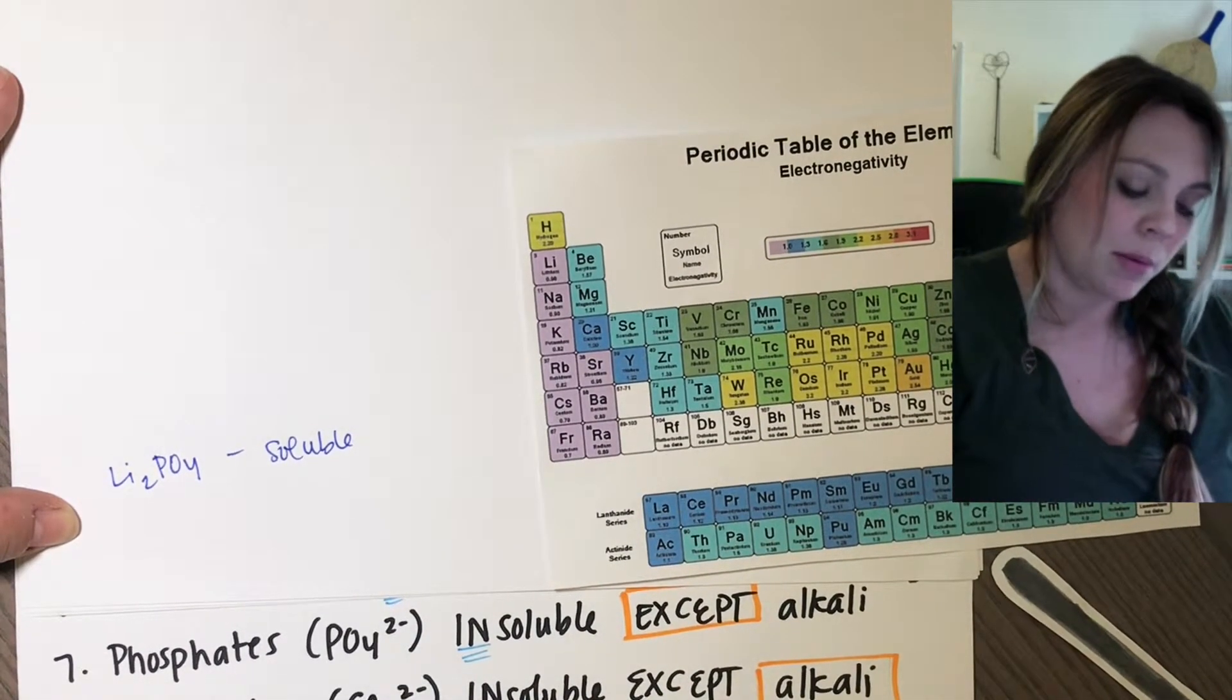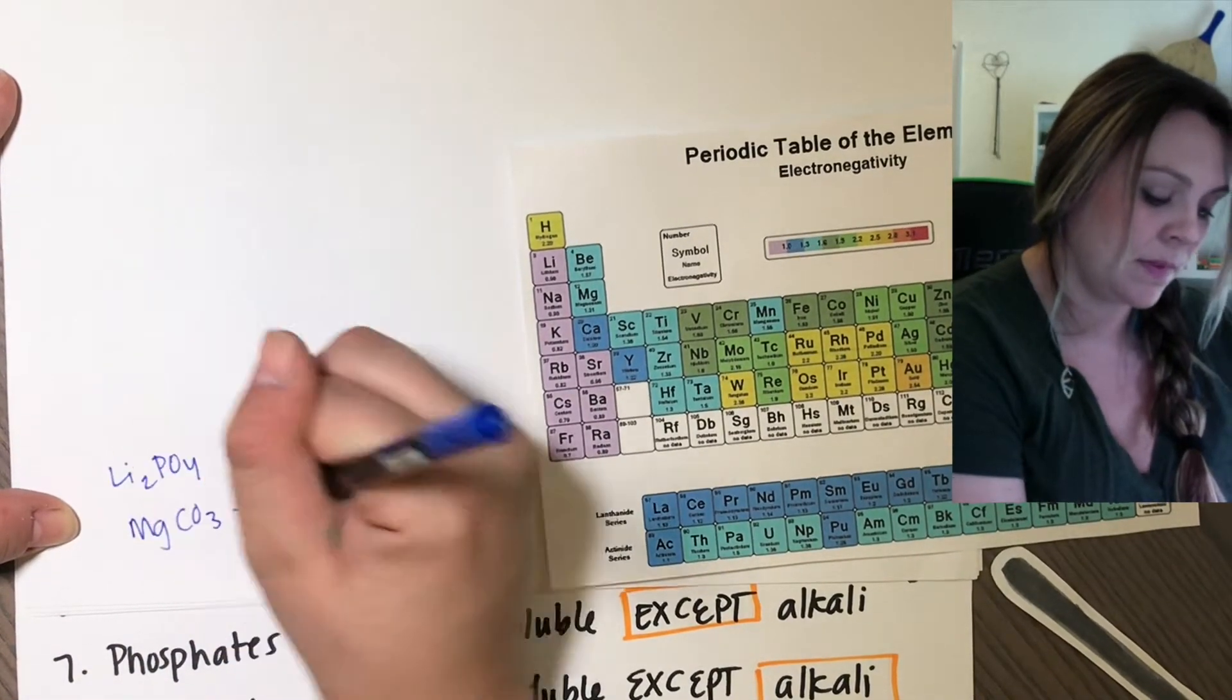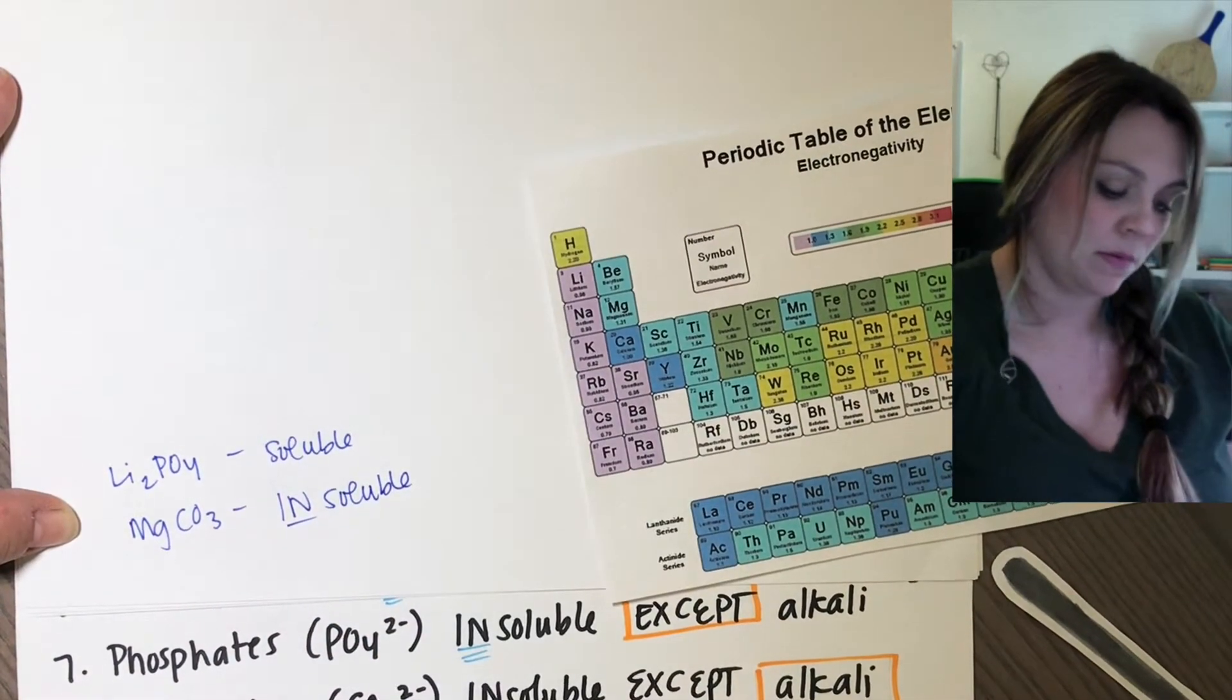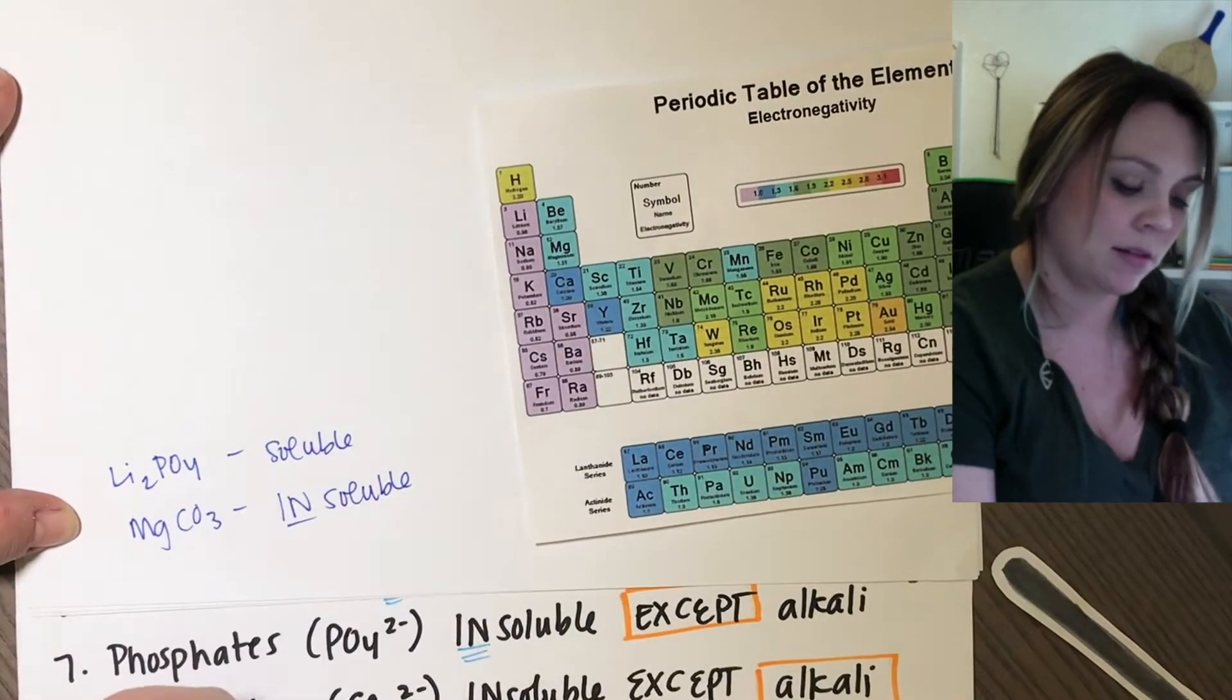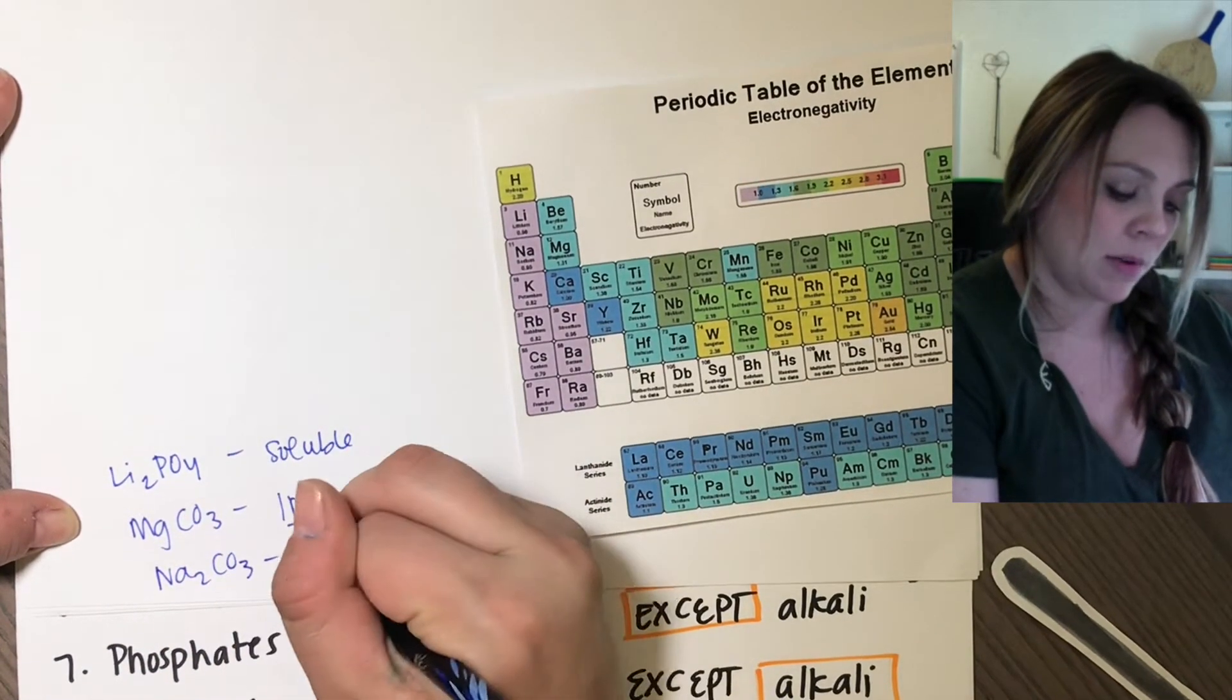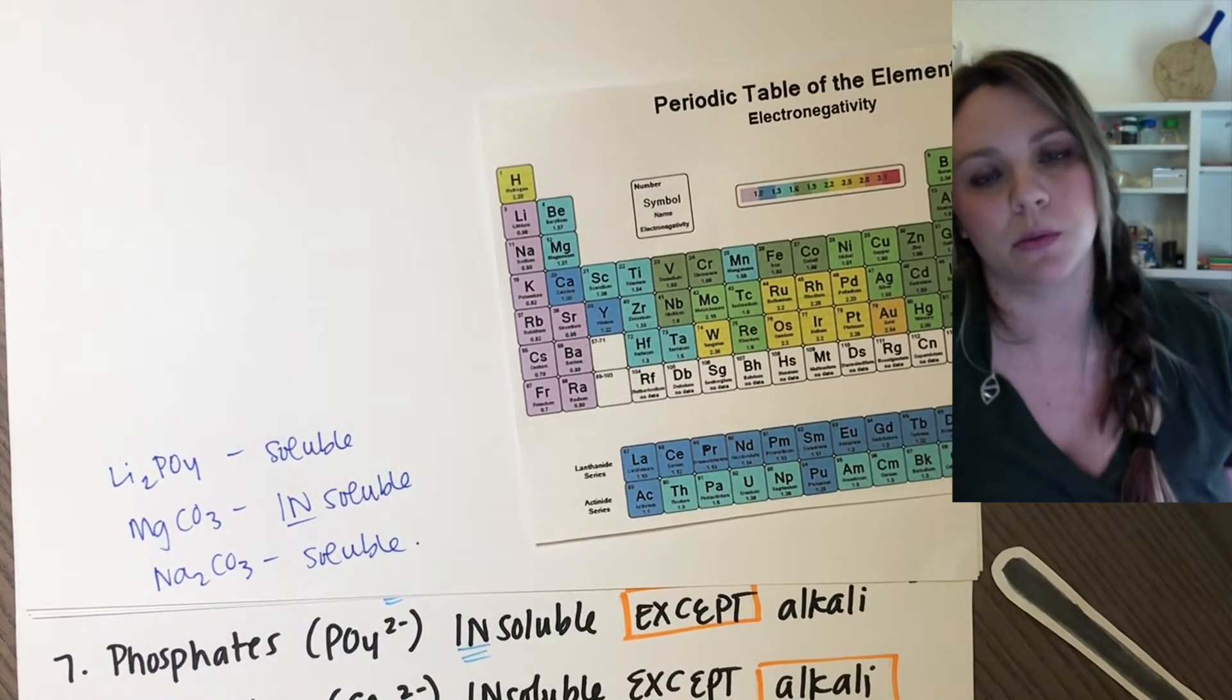Last one. Carbonates are insoluble unless they're bonded to an alkali metal. So if I had like magnesium carbonate, this would be insoluble because the carbonate is bonded to an alkaline earth metal. So if I had anything else, sodium carbonate, that would be soluble because it's bonded to an alkali metal. It's really easy. You just follow the rules. You just look at the compound and go down rule by rule until you can identify soluble or not soluble.